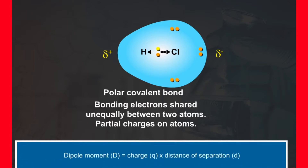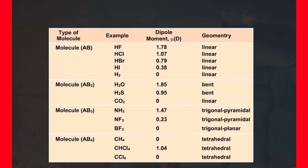Dipole moment is defined as the product of the magnitude of the charge and the distance of separation between the charges. Dipole moments of few molecules have been given in the table. The unit of dipole moment is Coulomb meter.